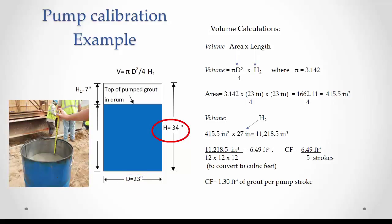At the end of pumping, he counted five strokes and the clear distance between the top of the grout and the top of the barrel was 7 inches. Now he can determine H₂ equals 34 minus 7 inches, which equals 27 inches.